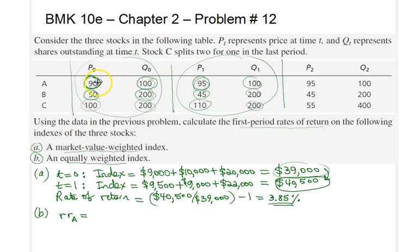So therefore the appreciation in the value of the stock is 95 divided by 90 minus 1, because 95 divided by 90 would give you a gross return; minus 1 will give us the net return of 5.56%. In a similar way, one can find the rate of return for stock B simply as the ratio 45 to 50 minus 1.